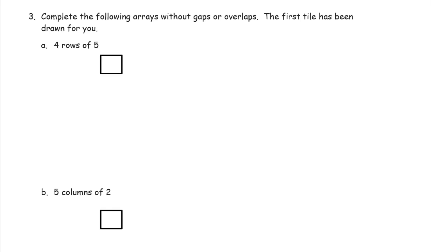Four rows of five. So if I know I need four rows, that's two rows, three rows, four rows, and there's going to be five in each row. That means I'm going to need five columns.